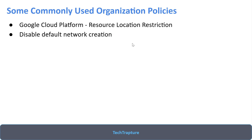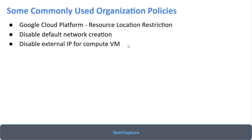The second commonly used policy is disabling default network creation. Whenever a GCP project is created, a default VPC is created automatically. The default VPC has many drawbacks, especially for production. You can use an organization policy so that whenever a new project is created, the default VPC creation is disabled. Third is disabling external IP addresses for virtual machines, which is not recommended for production.